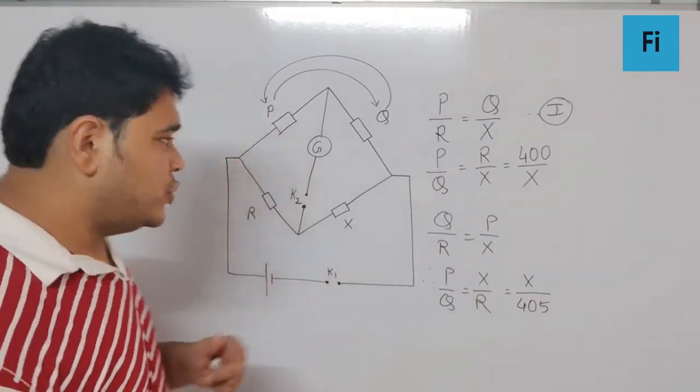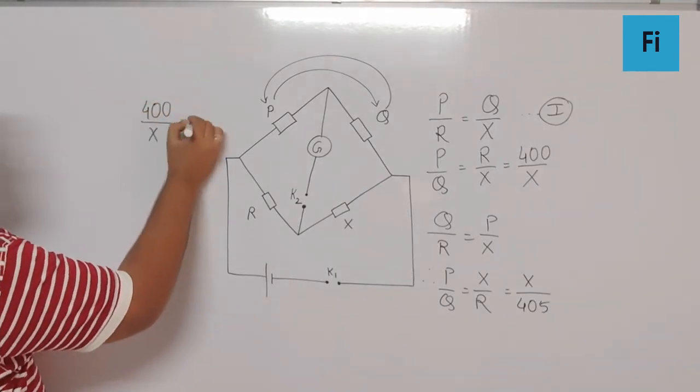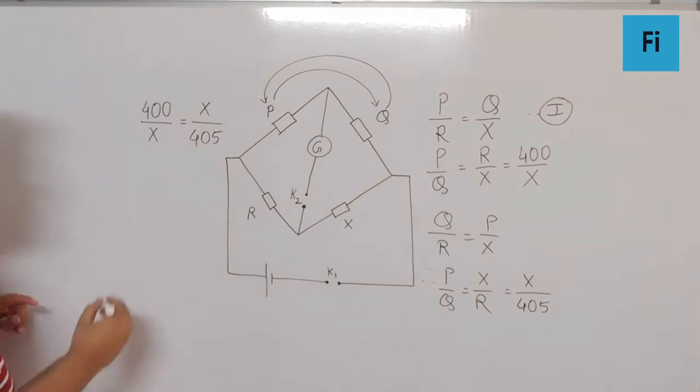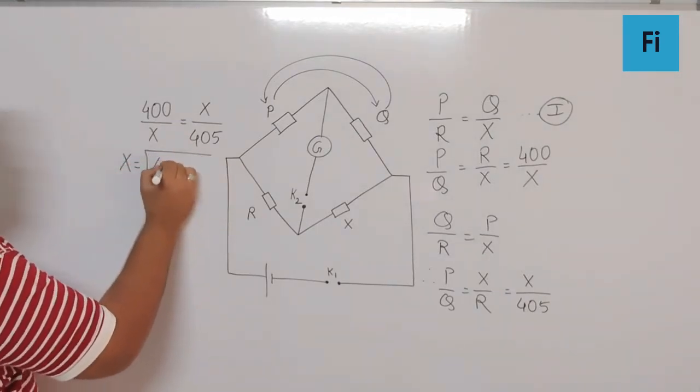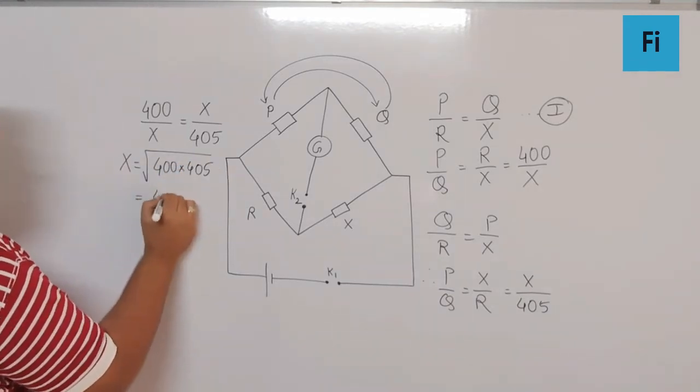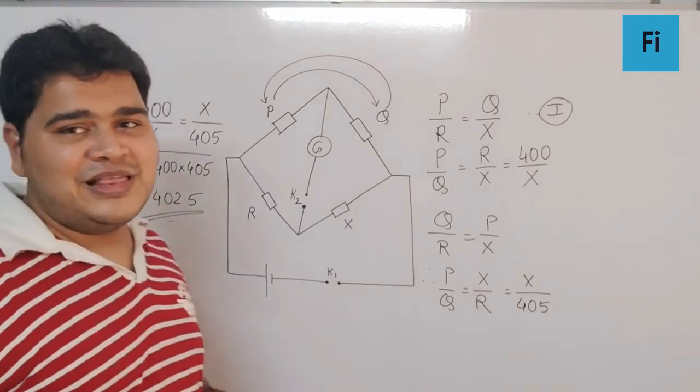We can say 400 by X equals X upon 405, and that means the value of X is going to be the square root of 400 into 405, which will be 402.5, and that is your final answer.